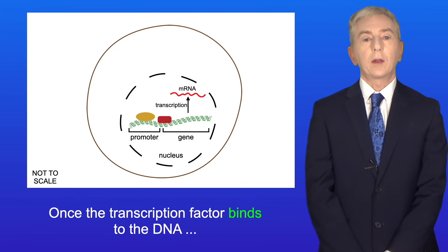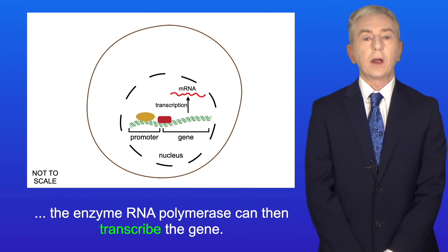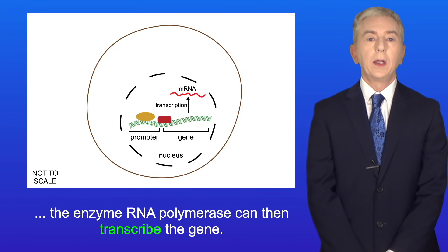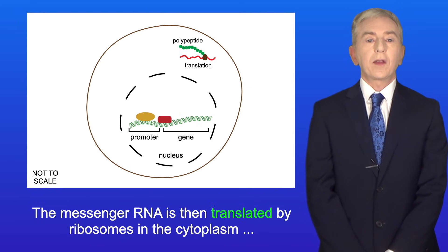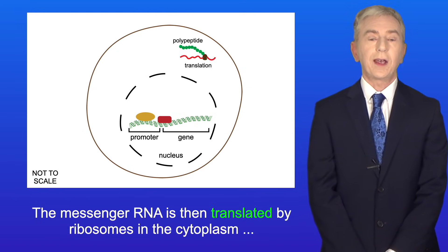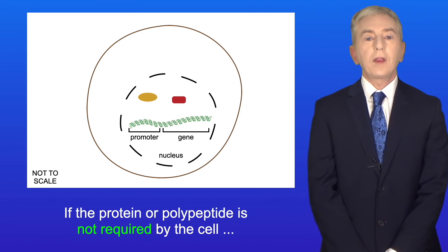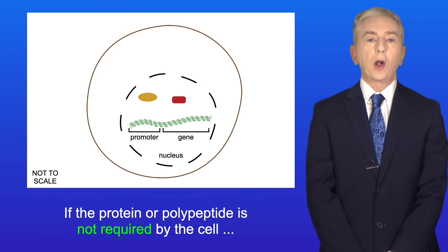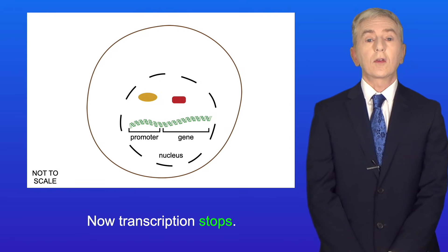Once the transcription factor binds to the DNA the enzyme RNA polymerase can then transcribe the gene, producing messenger RNA. The messenger RNA is then translated by ribosomes in the cytoplasm producing the polypeptide. If the protein or polypeptide is not required by the cell then the transcription factor detaches from the DNA and transcription stops.